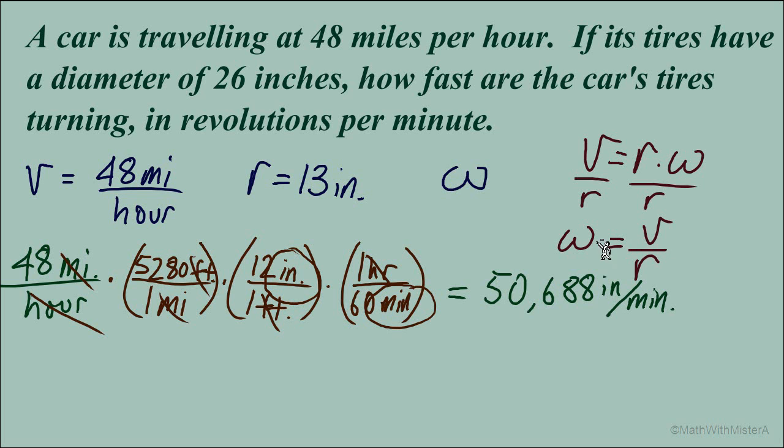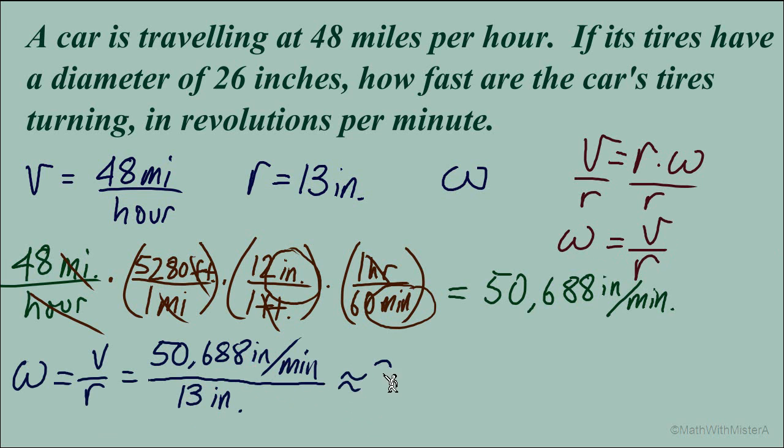Now we can go and use this formula, omega equals V over R. Velocity is in the numerator, the radius is in the denominator, and this fraction equals approximately 3,899.08. What are our units?